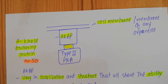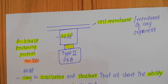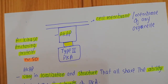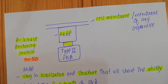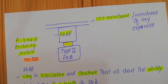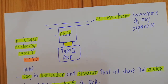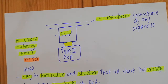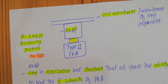Welcome back. In this video we are going to talk about the A kinase anchoring protein. In the last video we discussed protein kinase A and its different types based on the regulatory subunit — type 1 protein kinase A uses R1 regulatory subunits, and type 2 protein kinase A uses R2 regulatory subunits.